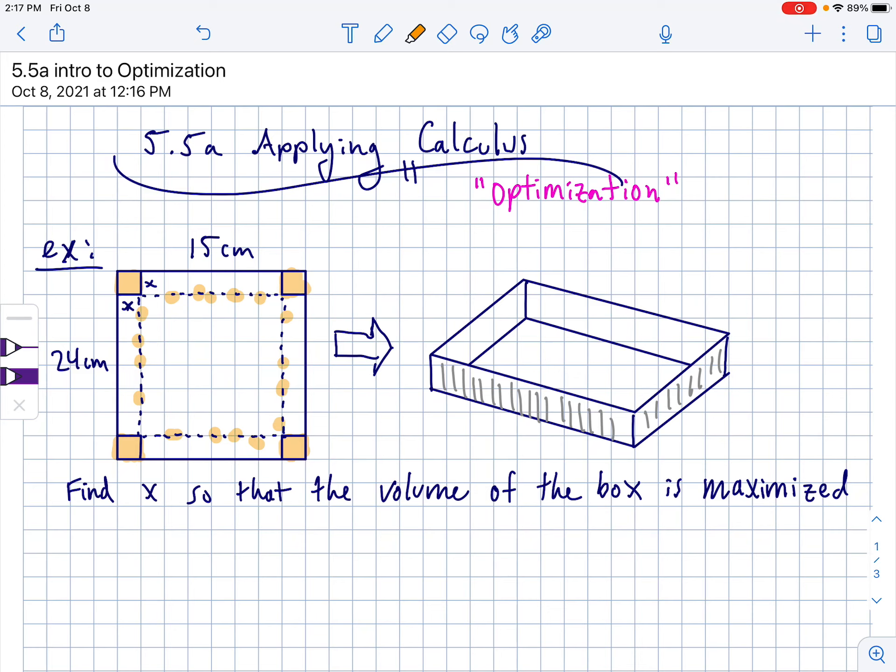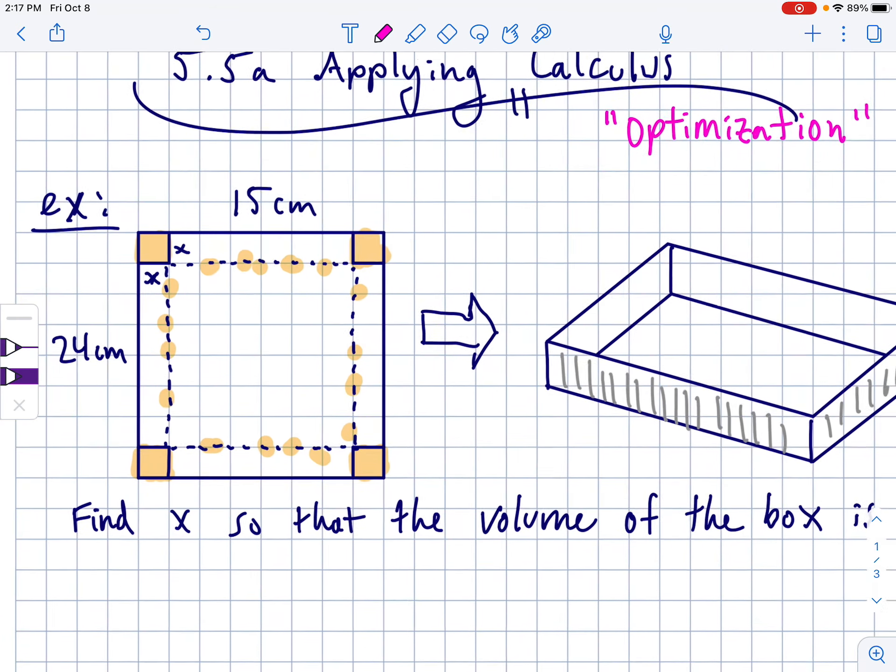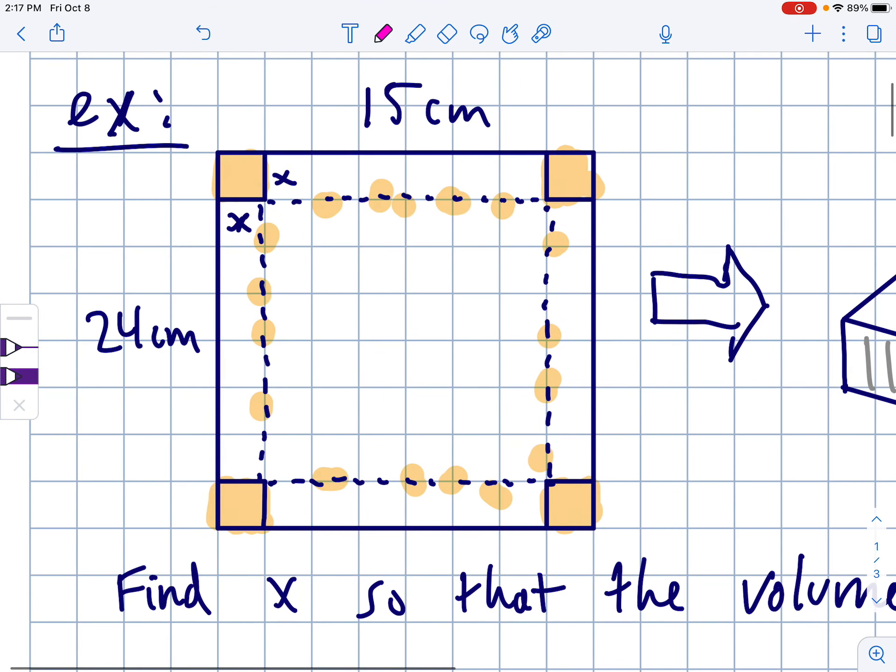This question is essentially how big should we cut the corners so that the volume of the box is maximized. When I've done this problem in earlier classes, we try different x values to show that it is indeed changing with different x values. Like not every x value will give you the same volume of the folded up box. So there has to be some certain x value that gives you the biggest volumized box you can.